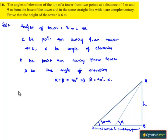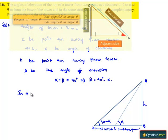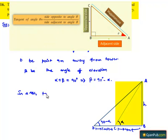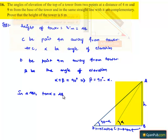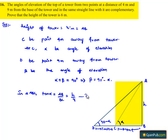Now we need to find the value of h. In triangle ABC, tan alpha is equal to opposite side by adjacent side, that is nothing but AB by BC, which is equal to h by 4. Let it be as equation number 1.